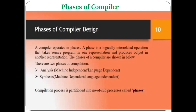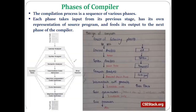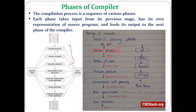Currently we are discussing the analysis phase of the compiler. In the analysis phase, three main phases come: lexical analysis, syntax analysis, and semantic analysis. We have already finished lexical analysis. Each phase takes input in one form and produces output in another. Today we are going to discuss the second phase — syntax analysis.